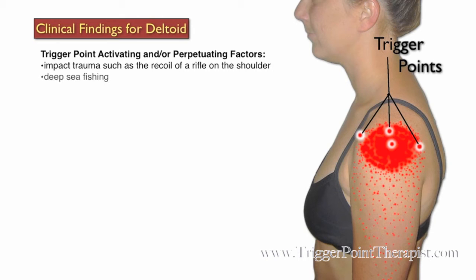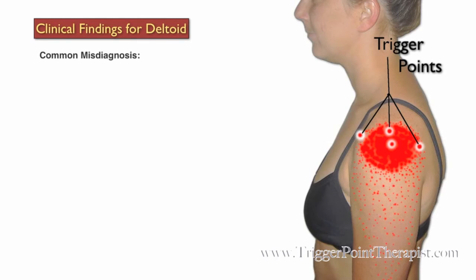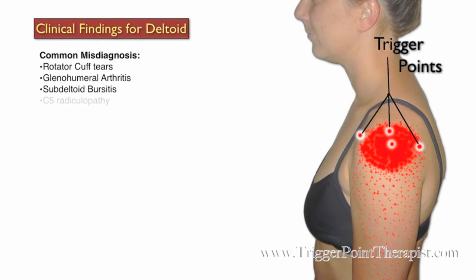Activating factors for trigger points in the deltoid include impact trauma such as the recoil of a rifle on the shoulder, deep-sea fishing, holding a power tool at shoulder height, and intramuscular injection such as a booster shot or flu shot. Referred pain from infraspinatus trigger points can also activate trigger points in the deltoid muscle. Clients with deltoid trigger points are commonly misdiagnosed as having rotator cuff tears, glenohumeral arthritis, sub-deltoid bursitis, C5 radiculopathy, or a strain or separation of the AC joint.